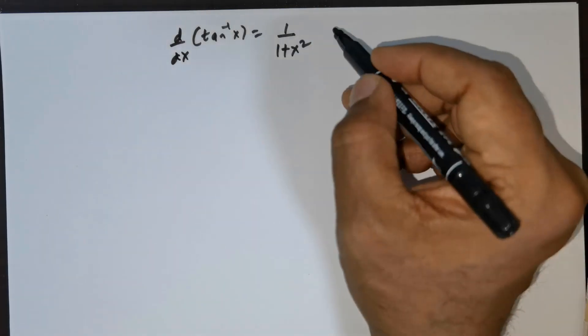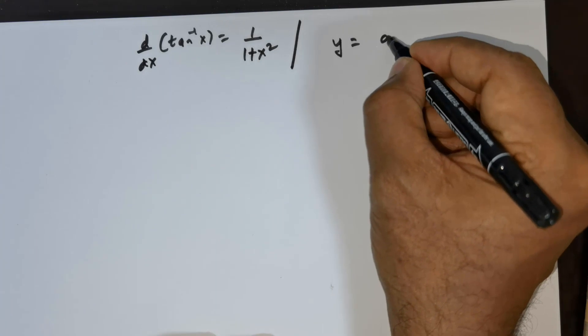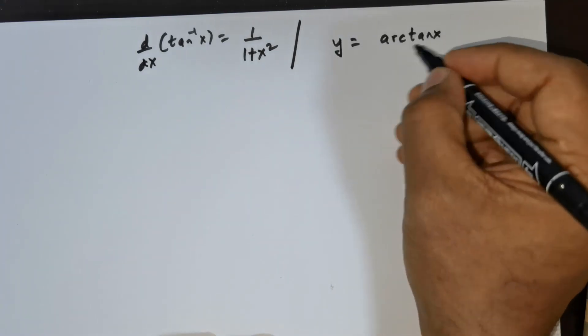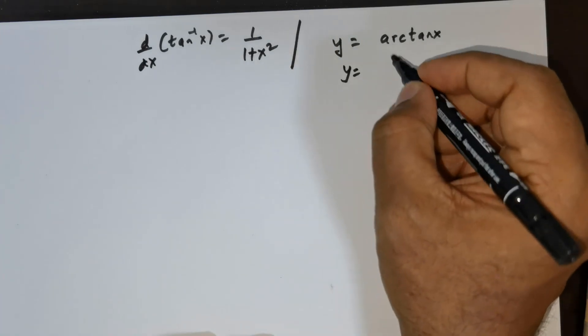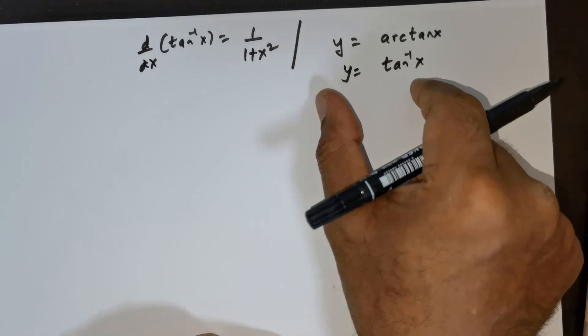Now what is the exact meaning of this? The meaning of this is suppose you are given arc tan x, or in this case this can be written as tan inverse of x. Suppose they are giving you this.